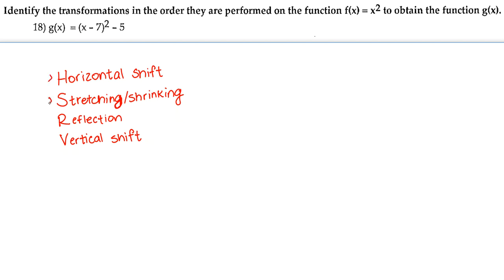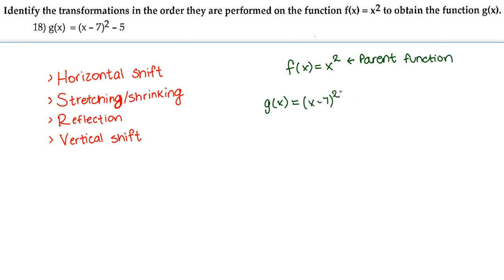Every one of these is a transformation that should be performed in order. So let's take a look at the parent function f of x equals x squared and compare it to g of x equals x minus 7 squared minus 5. Comparing the two, we have our x and our power of 2, and looking at the differences, we have our negative 7 and our negative 5.